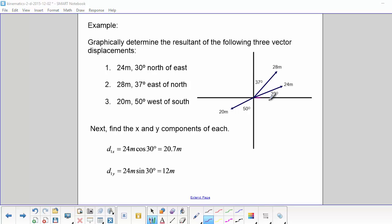Next, we need to find the X and Y components of each vector. So for the first vector, our X component is right along the axis, so we would use cosine. And the Y component is right here, so we would use sine.